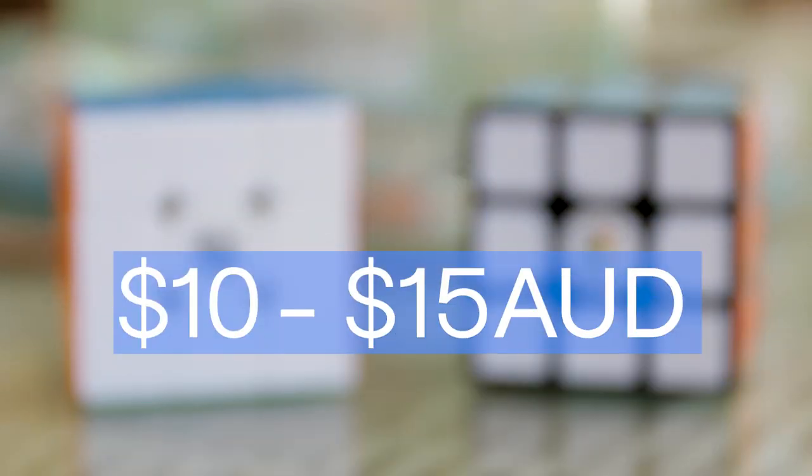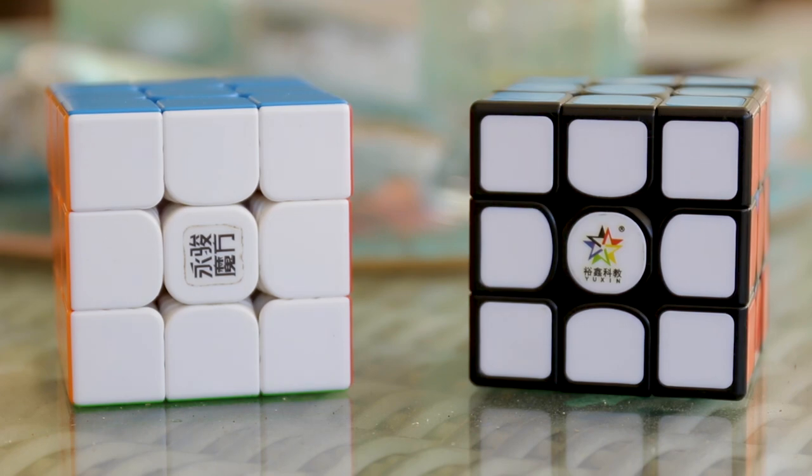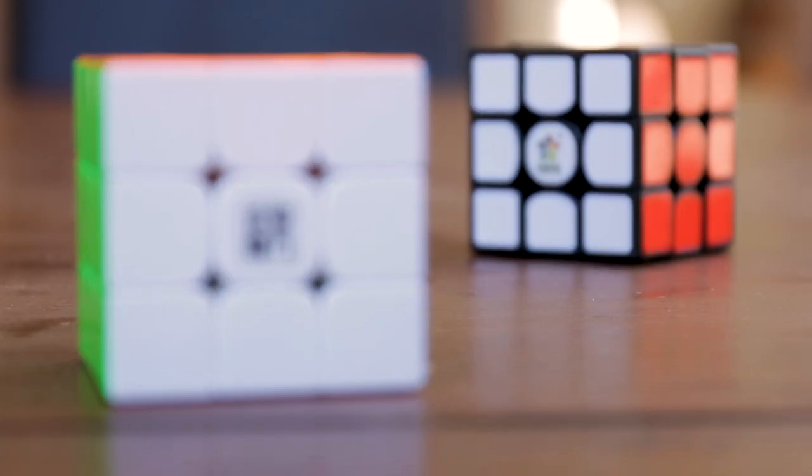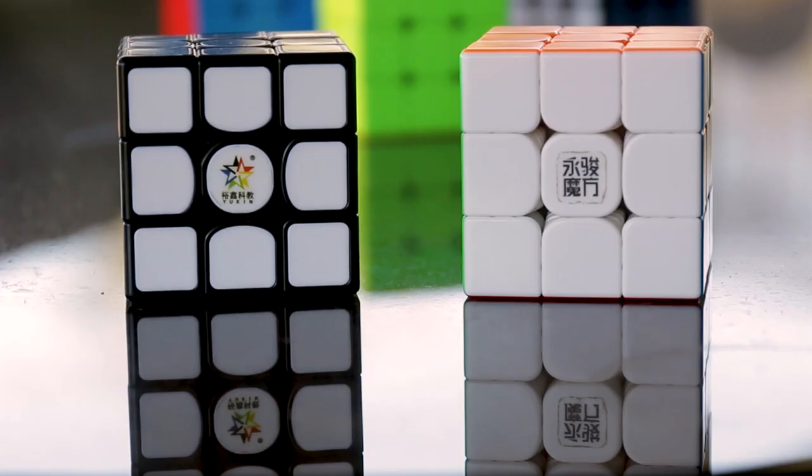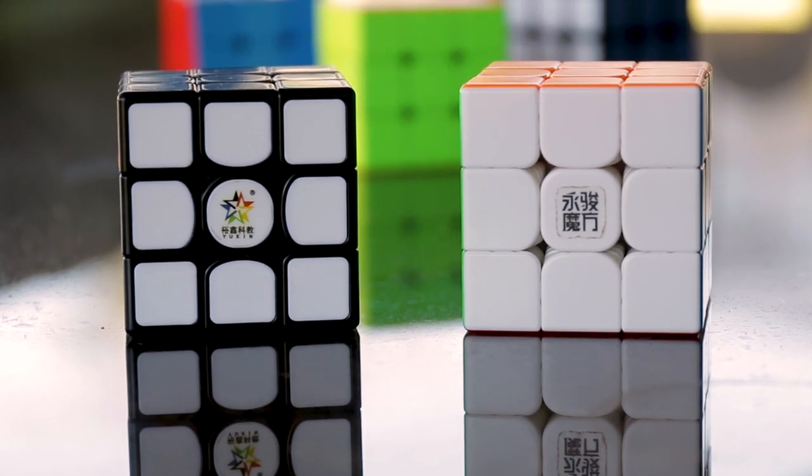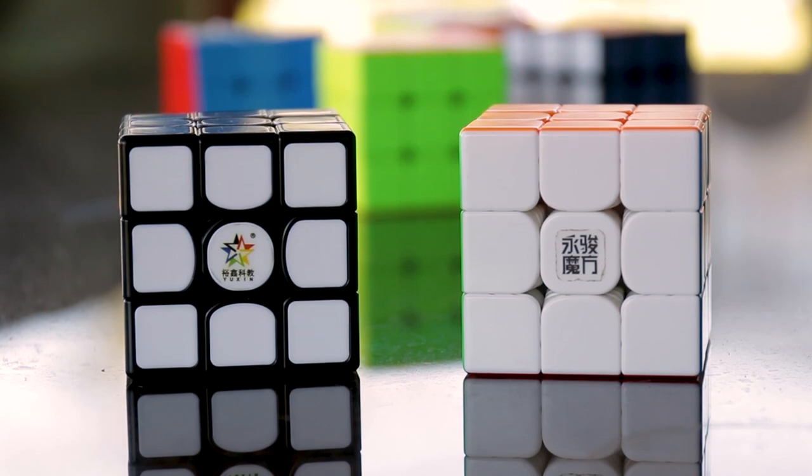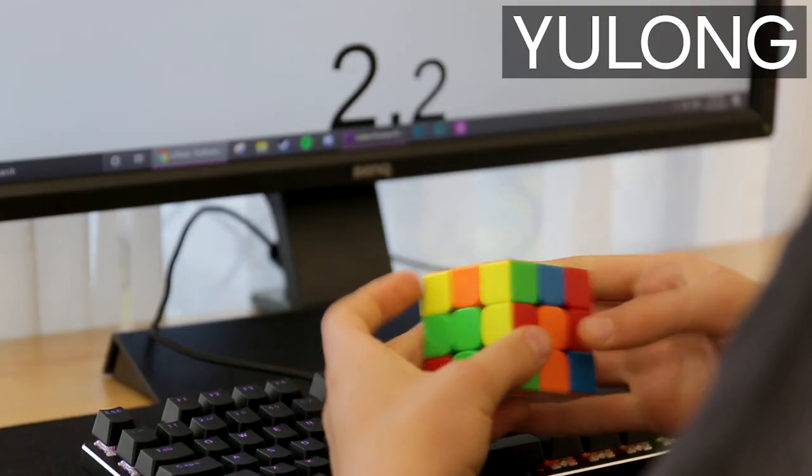Which brings me to the second tier of what I'm gonna call budget cubes, between 10 and 15 Australian or 8 and 10 US dollars. This price point is where you can start to find magnets, which really helps your cubes performance. The Yulong V2M from YJ and the Yushin Kailin V2M are two puzzles in this range that I've also compared before, you can check that out in the description. These cubes shocked me among many others because for a quarter of the price of the average flagship 3x3, they are super competitive. I personally can get great times on both of these cubes and you can really tell the difference the magnets make.